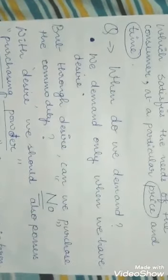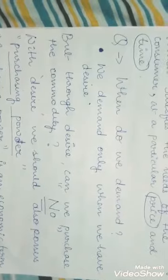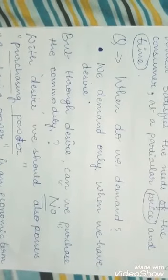With desire, we need something very important. What is that? Money. In economic terms, we say purchasing power. For example, we have the desire to purchase a bicycle. But is desire enough to fulfill the demand to have a bicycle? No. We should have the ability to purchase the commodity. Then only our desire is fulfilled.